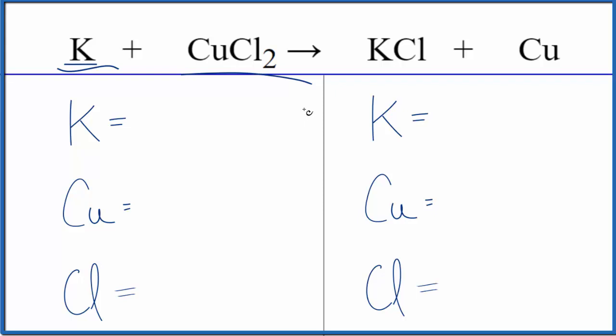So the type of reaction here, we have potassium is replacing the copper. The potassium pushes the copper out, copper is by itself, and now the potassium and the chlorine are together in KCl. Type of reaction? Single displacement.